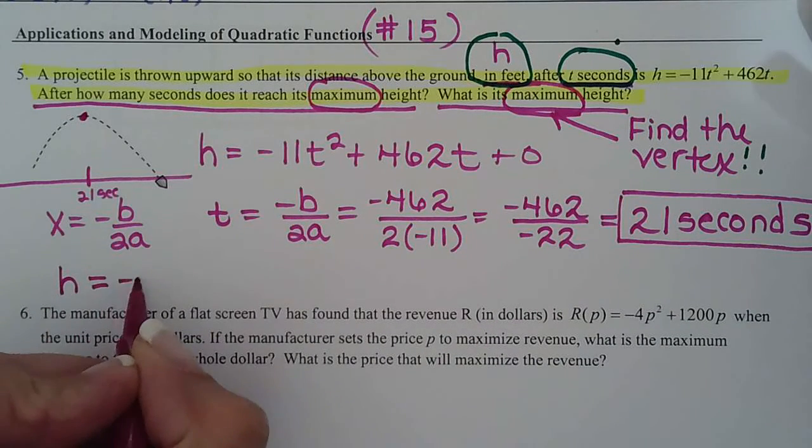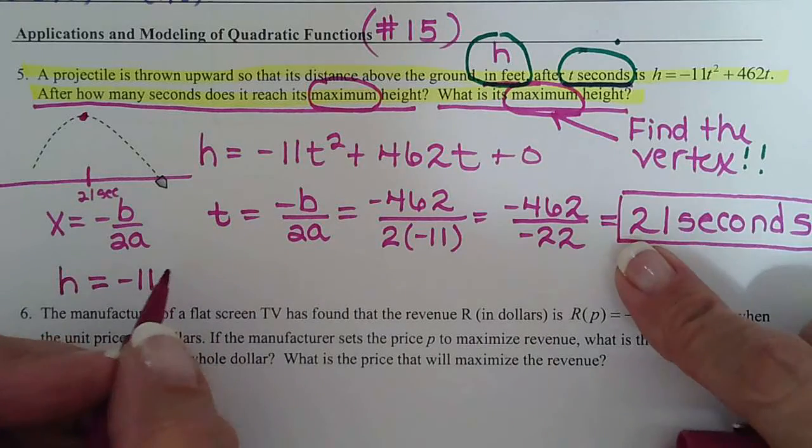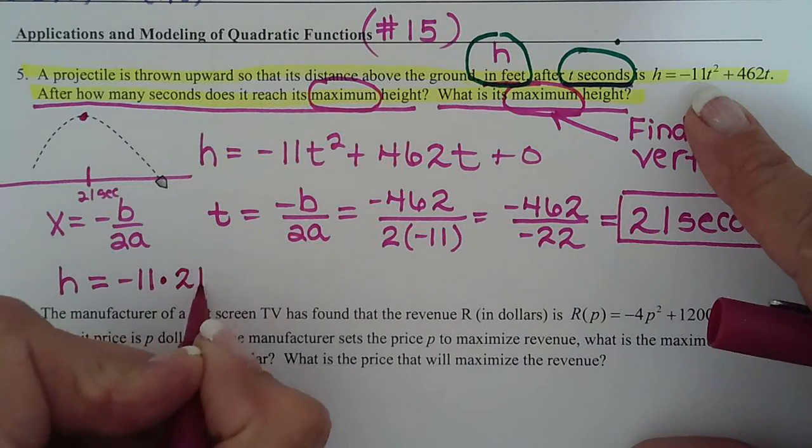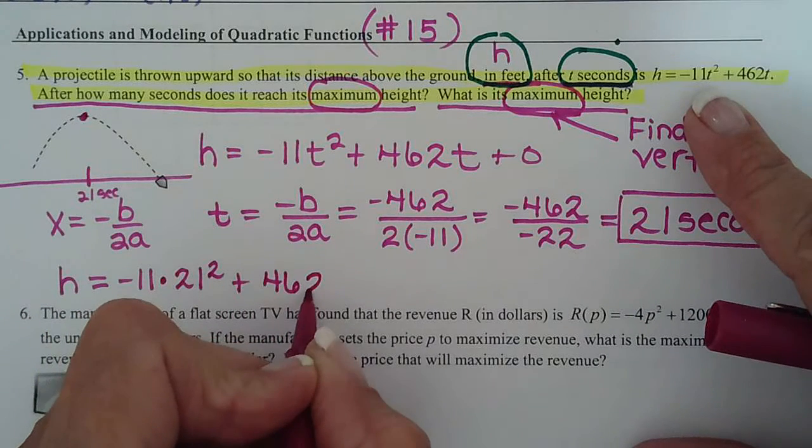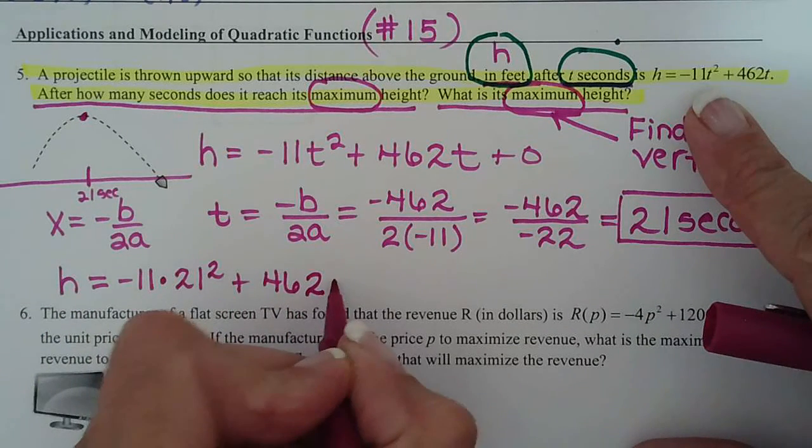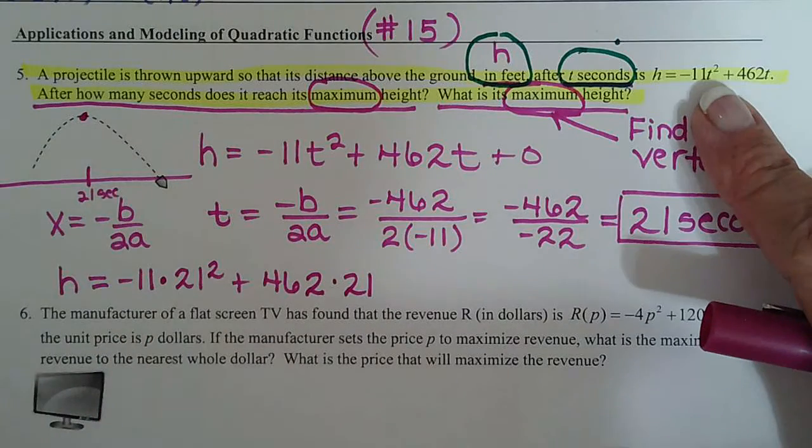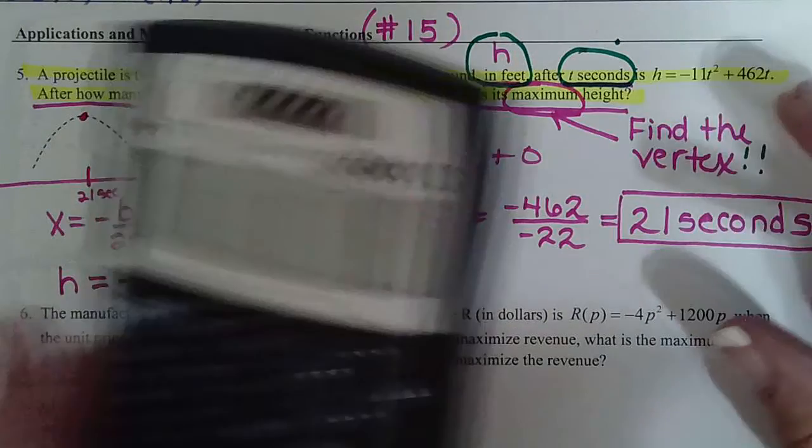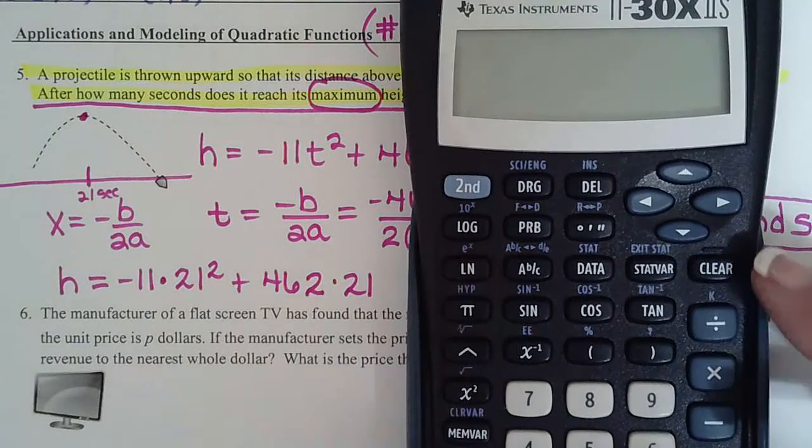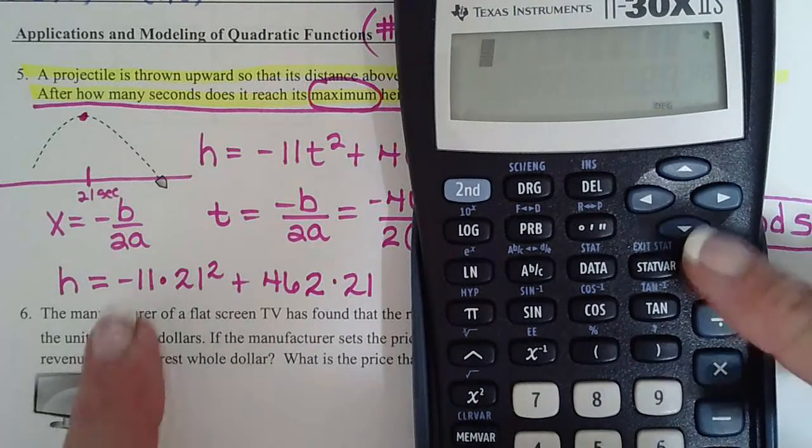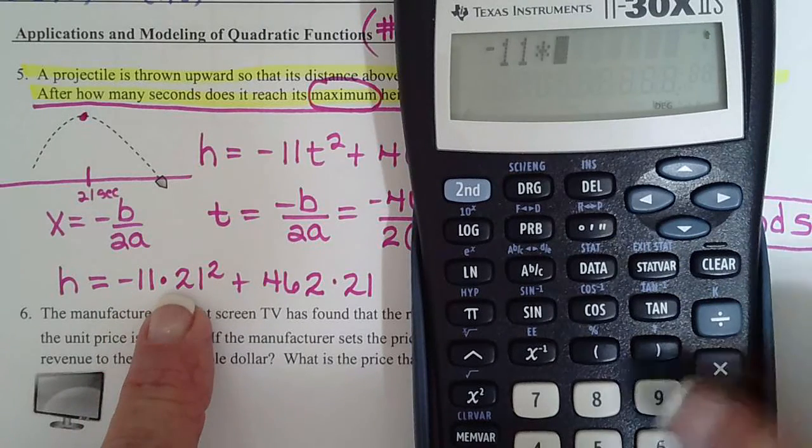So h is going to be negative 11 times - and I don't need parentheses because this isn't negative, so I can just write 21 squared plus 462 times 21. So you write that out, that's your work step, then you just go and type it in the calculator just like you see it.